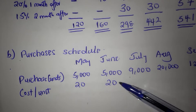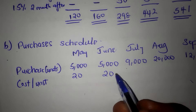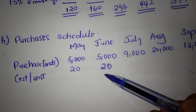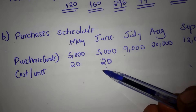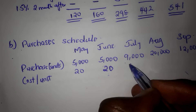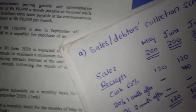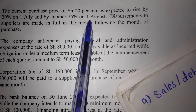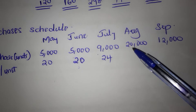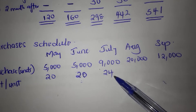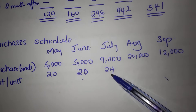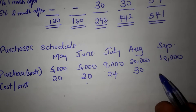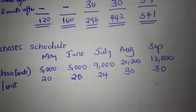Reaching July, the price increases by 20%, giving us 24 shillings per unit as the cost for July. Then in August, the price increases again by 25% on 1st August, so 24 shillings increased by 25% gives us 30 shillings. Therefore in September, the cost per unit will also be 30 shillings.